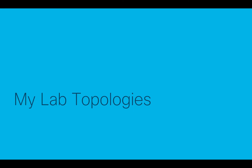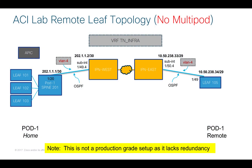Let me quickly show you my lab topologies, because I'm going to deploy this both ways. In the first example, where I have a single pod with no multi-pod, I'm going to create a layer 3 out — just like we do in multi-pod — from my home site to my layer 3 WAN router. I'll be borrowing my IPN devices, but in your case it could be any layer 3 WAN connectivity. On the remote site, also part of pod 1, I will be extending leaf 105. Note that I will be using fixed VLAN 4 to establish that when I build my layer 3 outs.